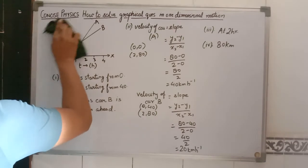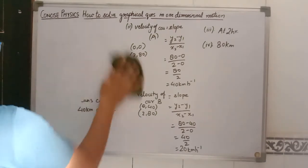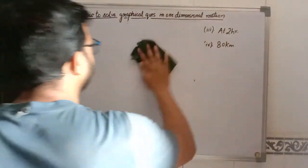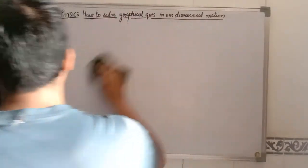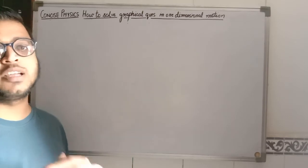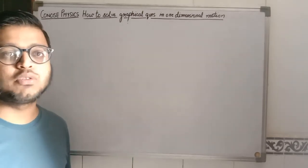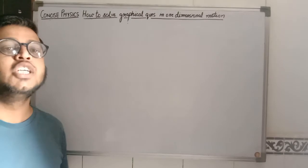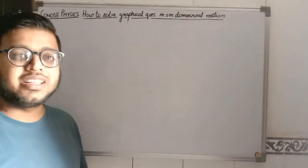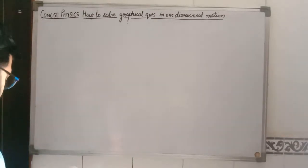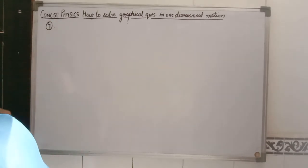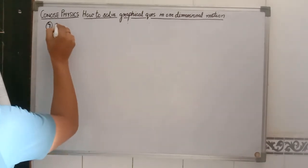Moving forward to question number 7 — you need to be very clear about your concepts. These questions are not such that one step always leads to the same next step, because the shape of the graph may be different. If your conceptual knowledge is clear, you will not face any problem. In question number 7, a graph is not given; instead, a table is provided.